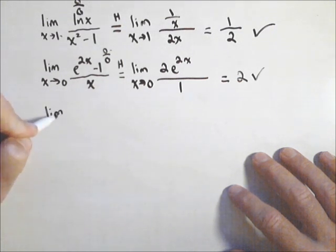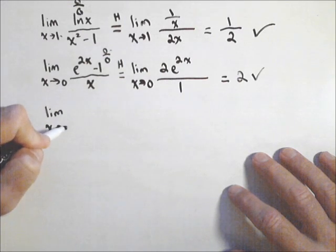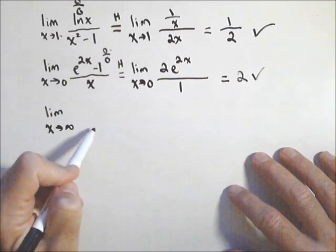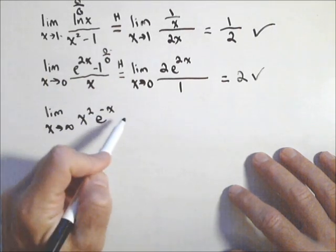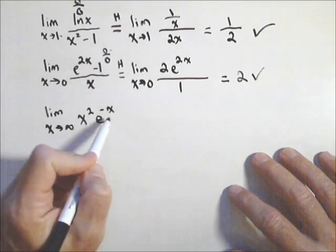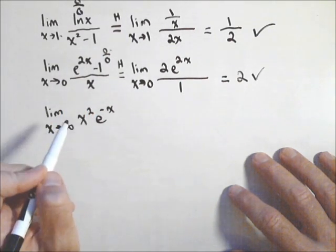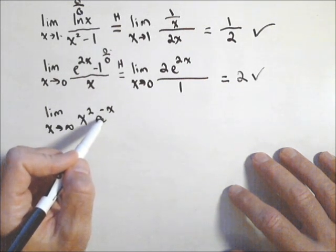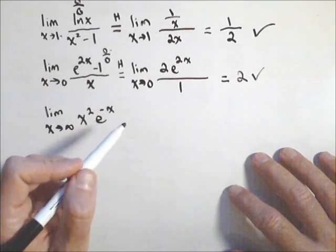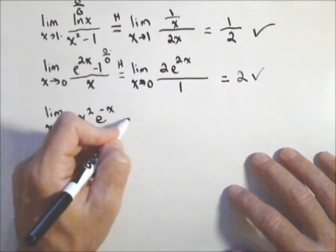How about one that doesn't start in an indeterminate form right off the bat? The limit as x goes to infinity of x squared e to the minus x. This is not a zero over zero or infinity over infinity. What it is is an infinity times zero. Some people call it an indeterminate form. I like to think of that it can be rewritten in an indeterminate form.